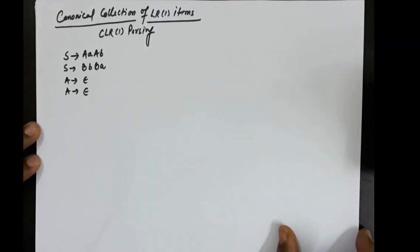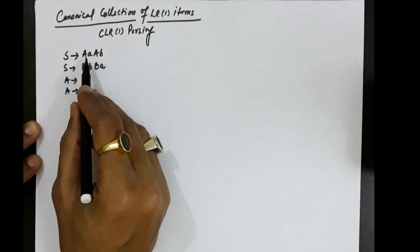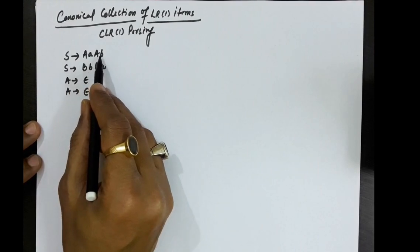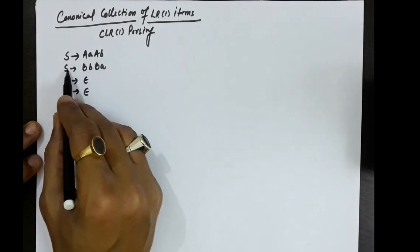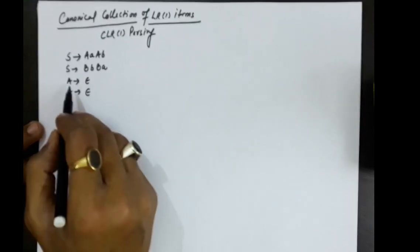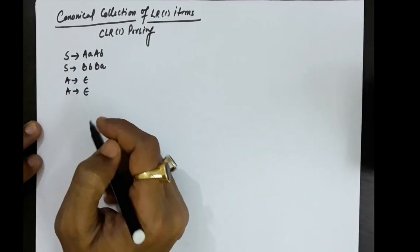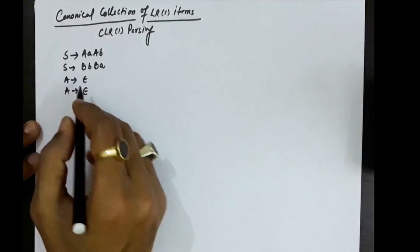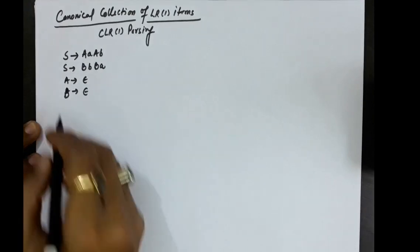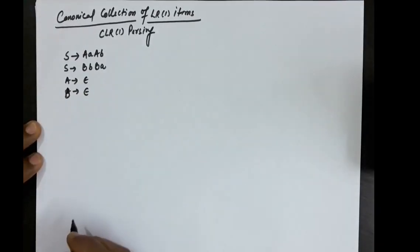Now let us take some more examples for the canonical collection of LR(1) items — that is the LR(1) parsing. Suppose there is a grammar: S produces capital A small a capital A small b; S produces capital B small b capital B small a; A produces epsilon; and B produces epsilon. So this is the grammar given to us.